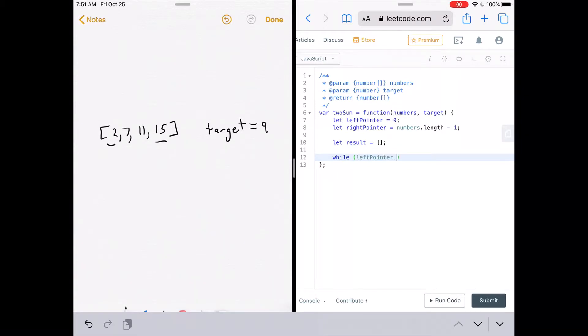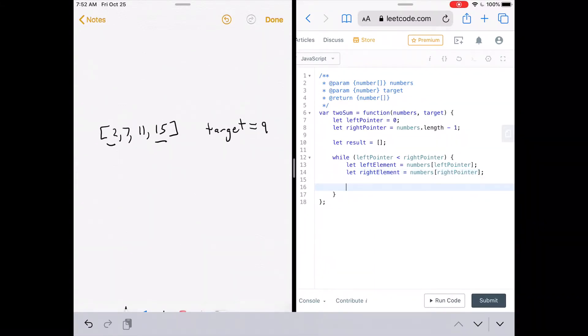All right, so now we need to loop over the elements in the array. So while left pointer is less than right pointer, it can't be less than or equal to because if the two pointers were ever equal, we'd accidentally be adding the same element twice. All right, so now we need references to both elements at the pointers. So let left element equal numbers, left pointer. This would be the number two. And let right element equal numbers, right pointer.